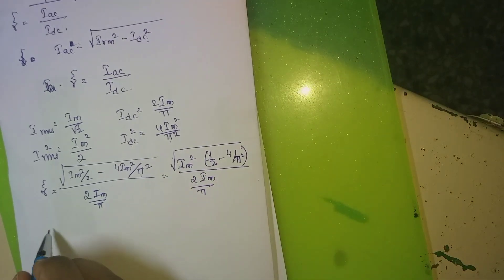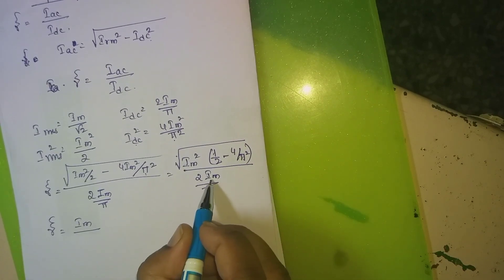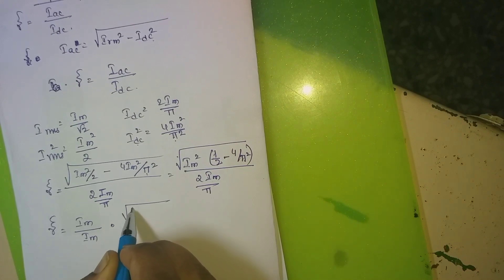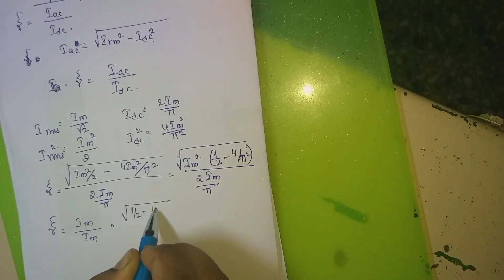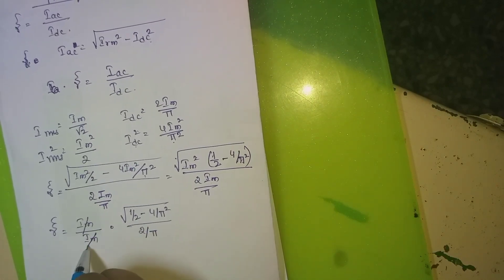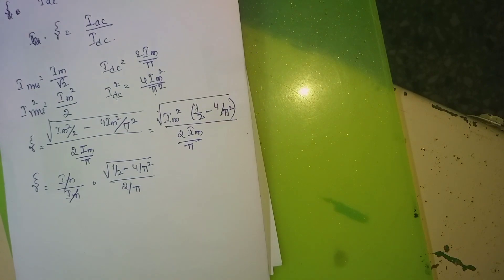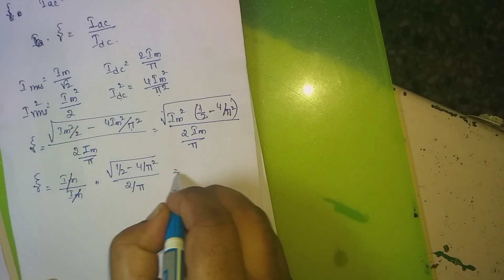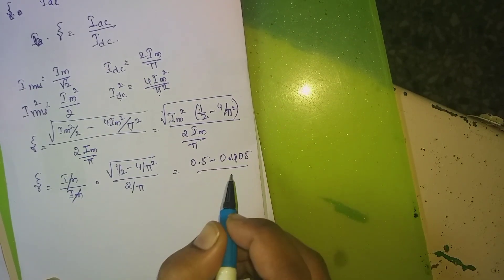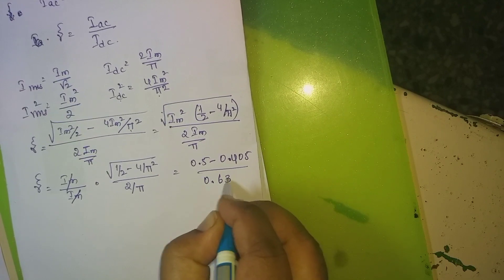After simplification, IM cancels from numerator and denominator, giving us the square root of (1/2 minus 4/pi squared) divided by (2/pi). Numerically: 0.5 minus 4 divided by pi squared equals 0.405, and 2 divided by pi equals 0.6366.